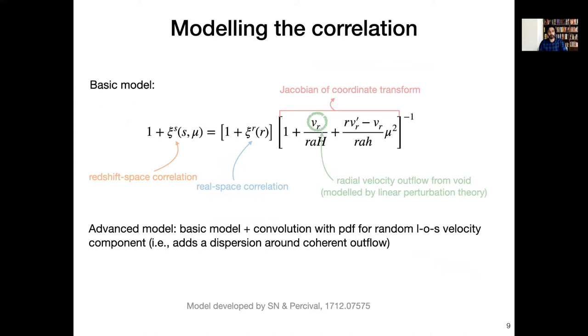So how do we actually model the data? The model is a very simple one, it's the equivalent of a Kaiser RSD model, and as you can see it here on the left hand side, ψ superscript s refers to the redshift space correlation and that's just related to ψ superscript r, the isotropic real space correlation, by a term that represents the Jacobian of the coordinate transformation and this Jacobian depends on the velocity term and the derivative of the velocity term. And in order to model that velocity we just use linear perturbation theory, very simple, to relate that to the matter underdensity in the void. Now actually in measuring this in the data we use a slightly more complicated model where we convolve this with a velocity PDF that accounts for a dispersion in the velocity with a random component along the line of sight, but the basic picture is contained in this equation here.